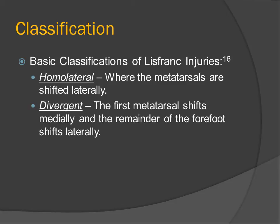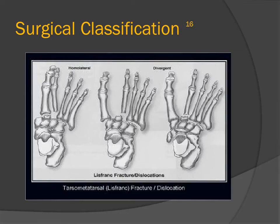Surgeons will use a different classification system which includes homolateral and divergent, which differ in the ways that the metatarsals are shifted. This classification system is generally a way of communicating the injury presentation rather than predicting the success of treatment. In homolateral, the metatarsals are shifted laterally, and in divergent, the first metatarsal is shifted medially while the others are shifted laterally.